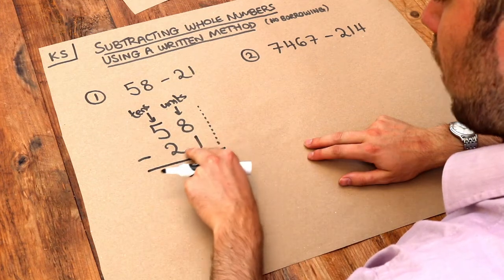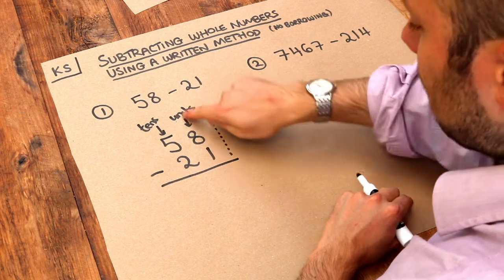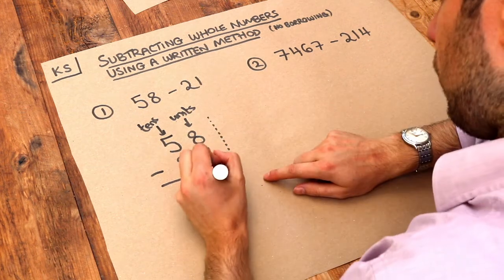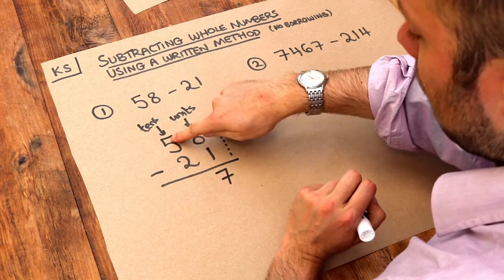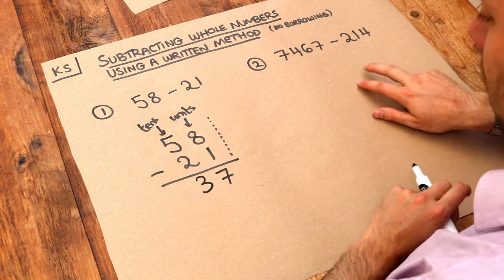Now all we do is work right to left and then subtract these digits. So in the units column we're going to do 8 minus 1, which is 7, and then this next column we do the 5 minus 2, which is 3, and we end up with 37.